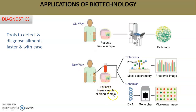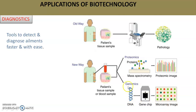Samples of tissues or blood are collected and processed through various devices. There are techniques like mass spectrometry where protein samples can be analyzed, proteomic imaging, gene chip studies, identifying genes on DNA, finding out if any chromosomal disorder is present, microarray imaging, etc. The advancement in these technologies has made diagnostics simpler, faster, and easier.